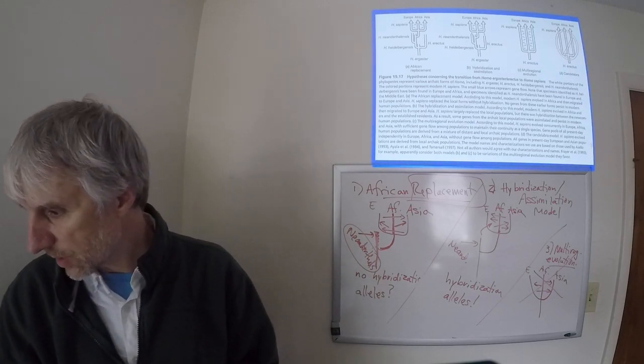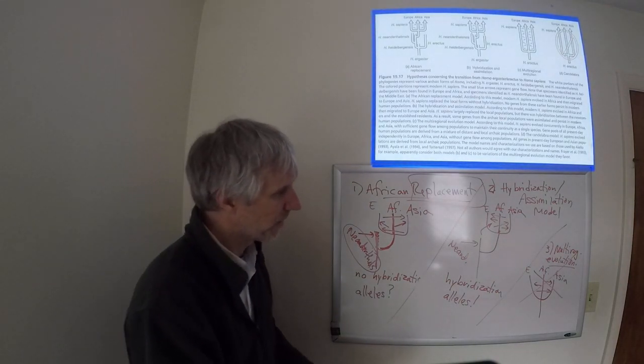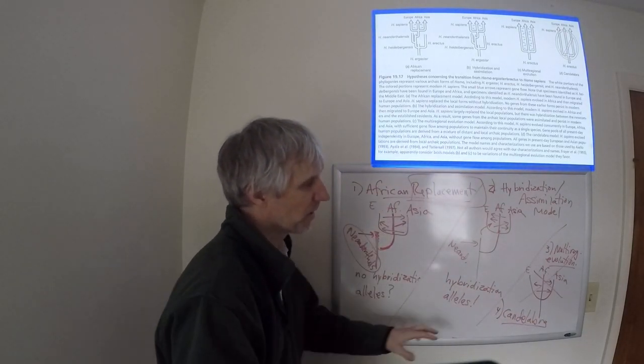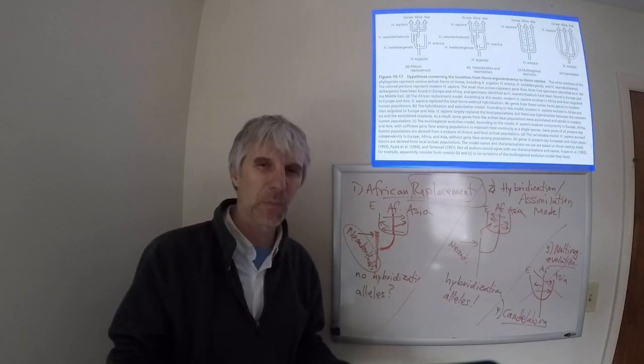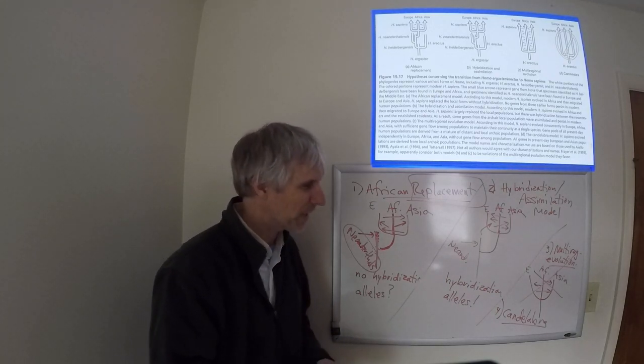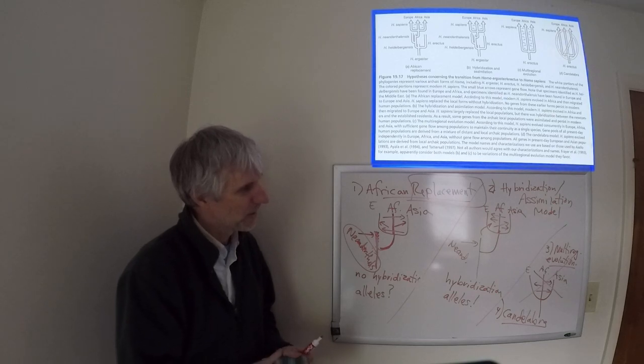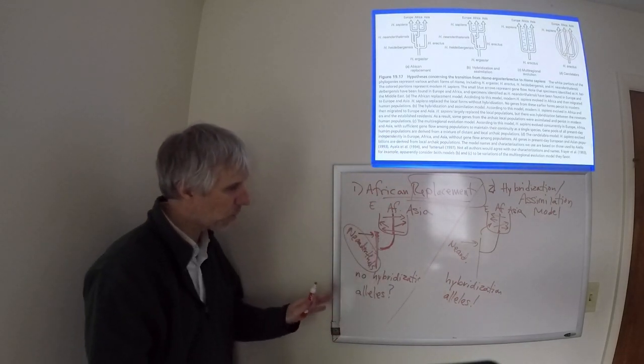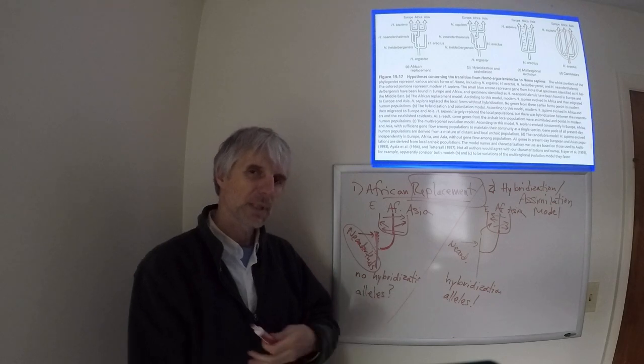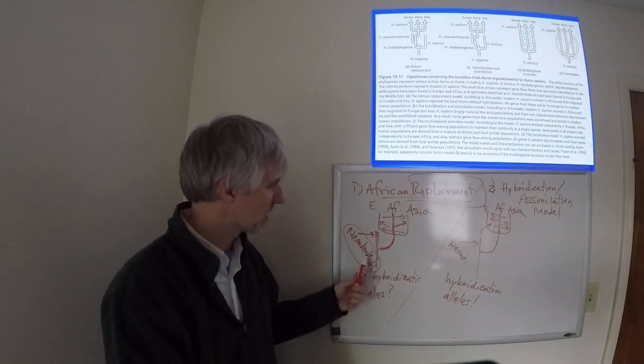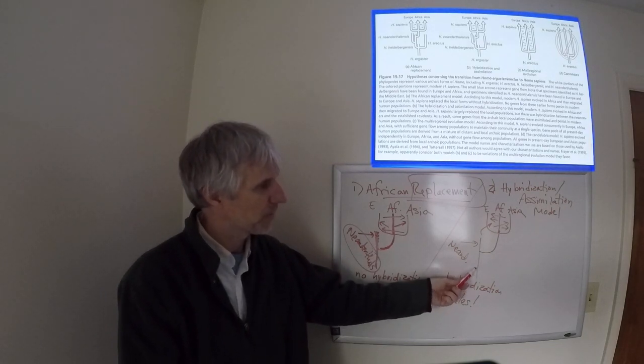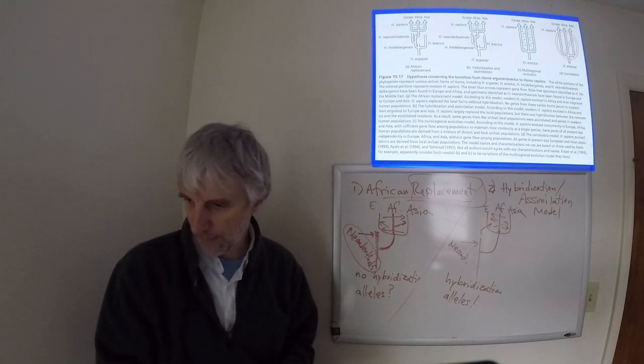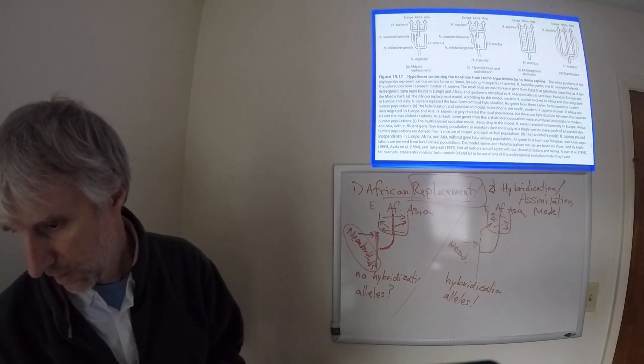And then the last model here, the candelabra model, I don't even know if it's worth talking about, but in the candelabra model, humans evolved simultaneously in three different places, but they didn't migrate, and therefore they didn't remain as one species. And that seems kind of silly, because we're all one species. So I'm not going to talk about the candelabra or the multi-regional evolution. Let's just concentrate on this question here. What happened to the Neanderthals in terms of modern-day Homo sapiens? Did they contribute to the modern-day Homo sapiens, which would be hybridization, or did they not contribute, in which case they died out and their alleles died out with them?